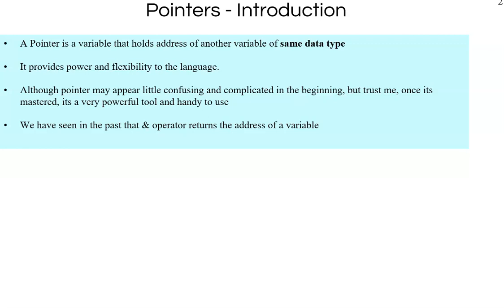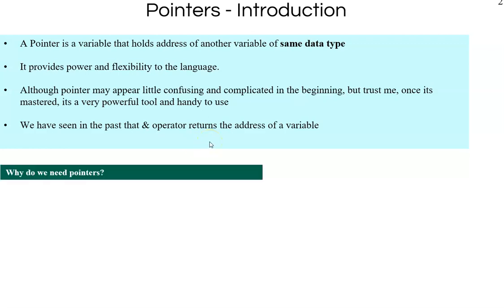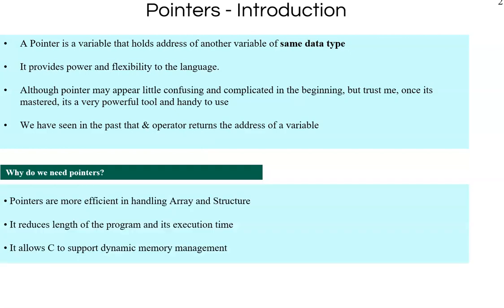The ampersand operator and the star operator are really useful in pointers. We will look at them very shortly. Why do we need pointers? Pointers are most efficient in handling arrays and structures. It reduces the length of the program and it is very fast. It allows dynamic memory management. We will see that shortly.